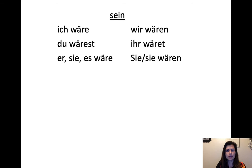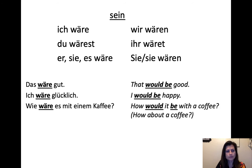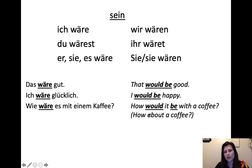For sein — to be — the subjunctive forms are: ich wäre, du wärst (or wärst, either form is fine), er/sie/es wäre, wir wären, ihr wäret, sie wären — all meaning "would be." Examples: "Das wäre gut" — that would be good. "Ich wäre glücklich" — I would be happy. "Wie wäre es mit einem Kaffee?" — How would it be with a coffee? — a very common way to invite someone for coffee.